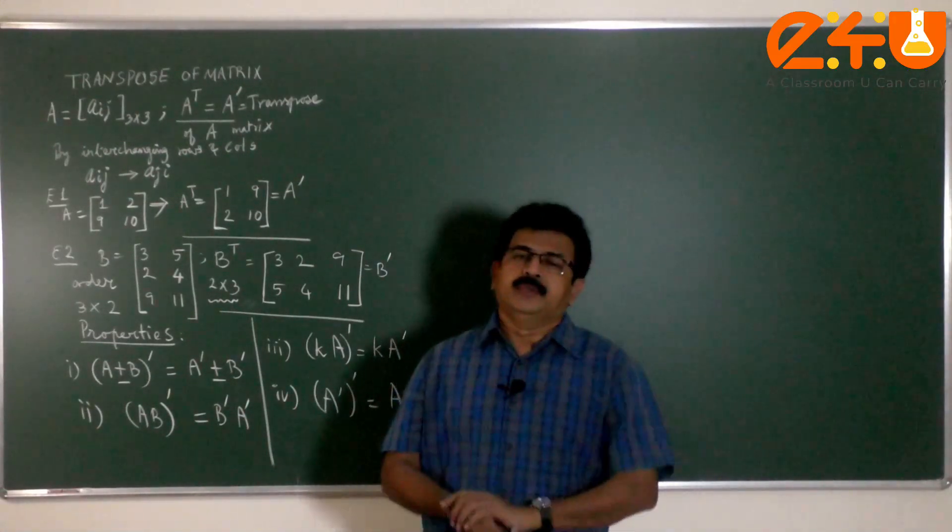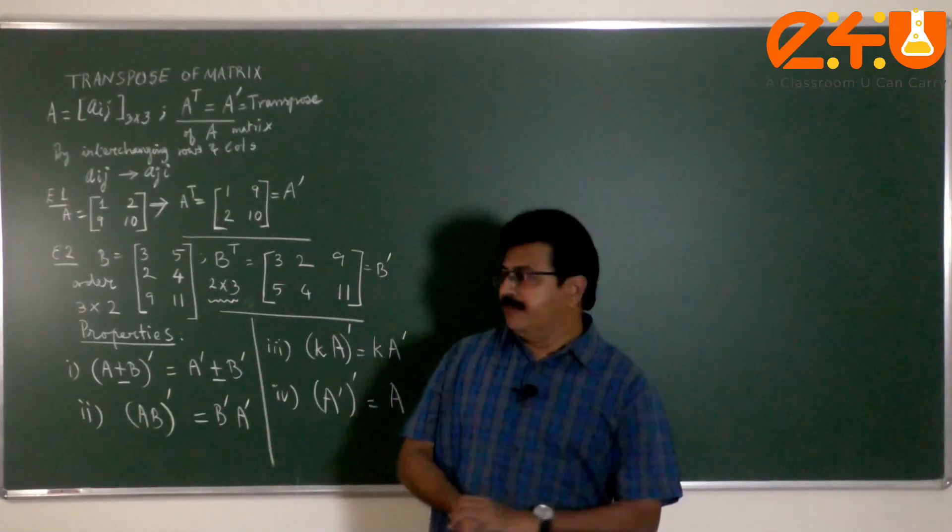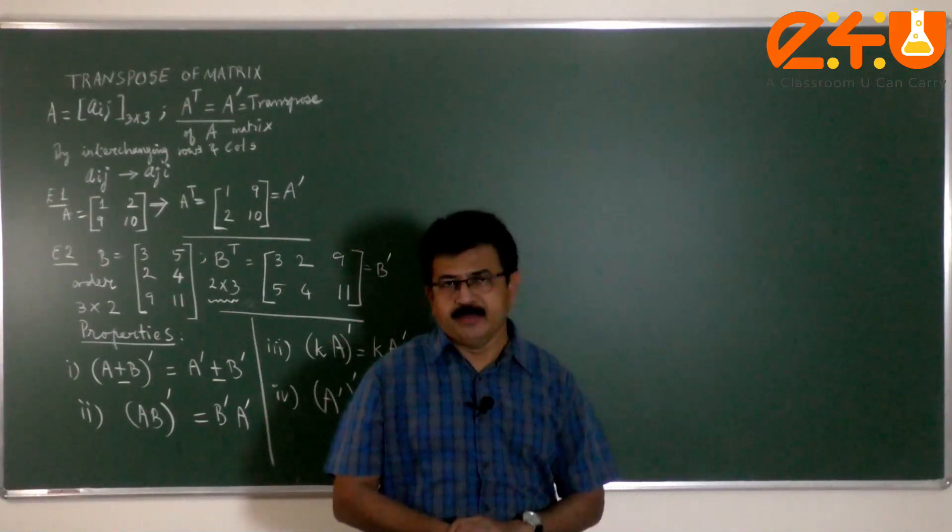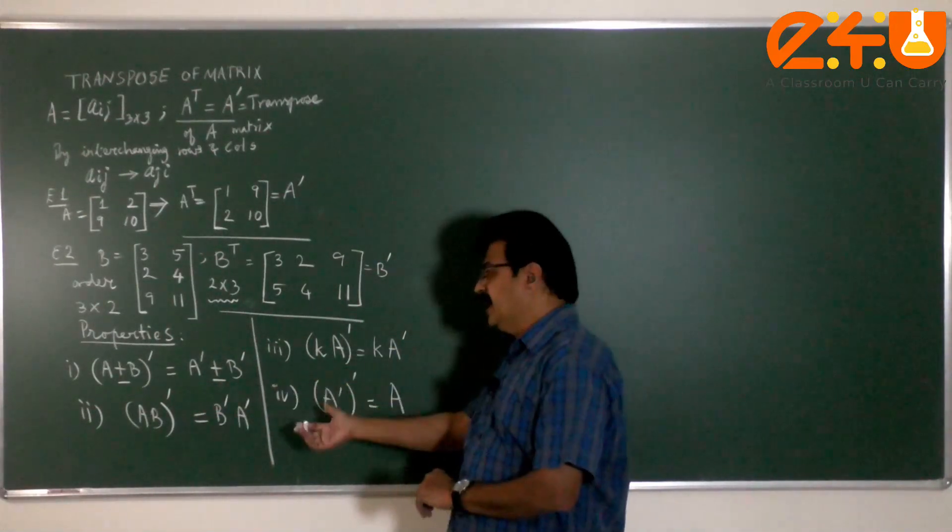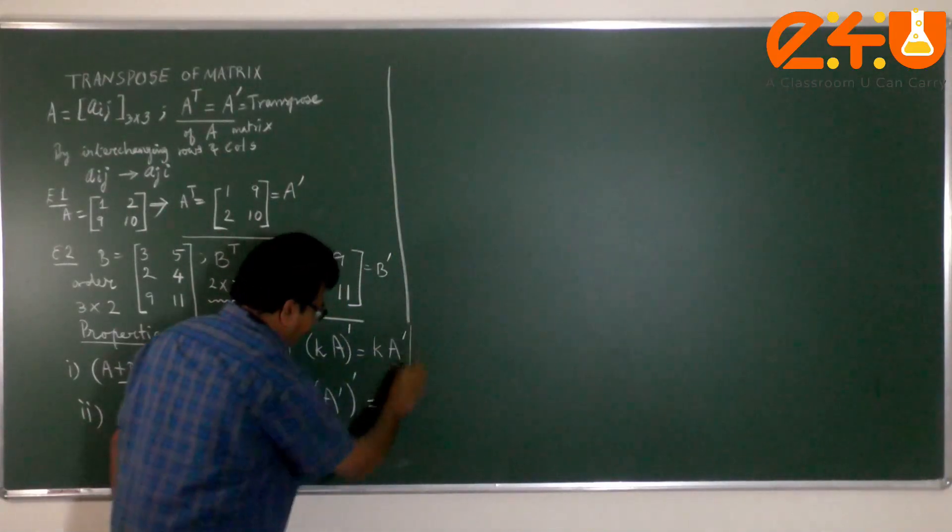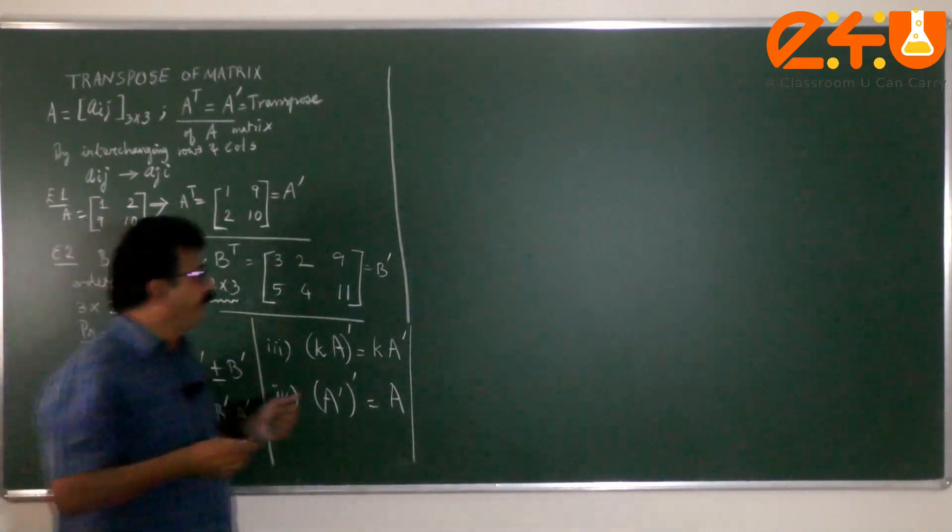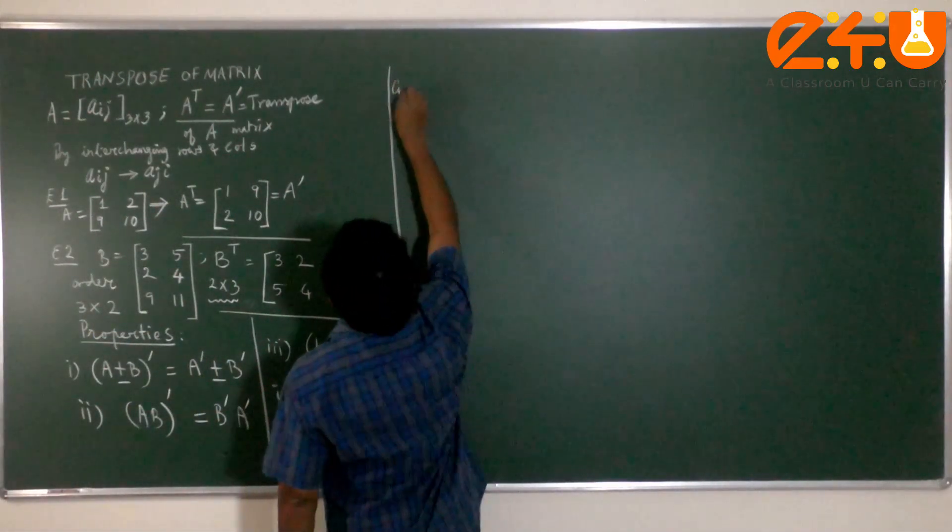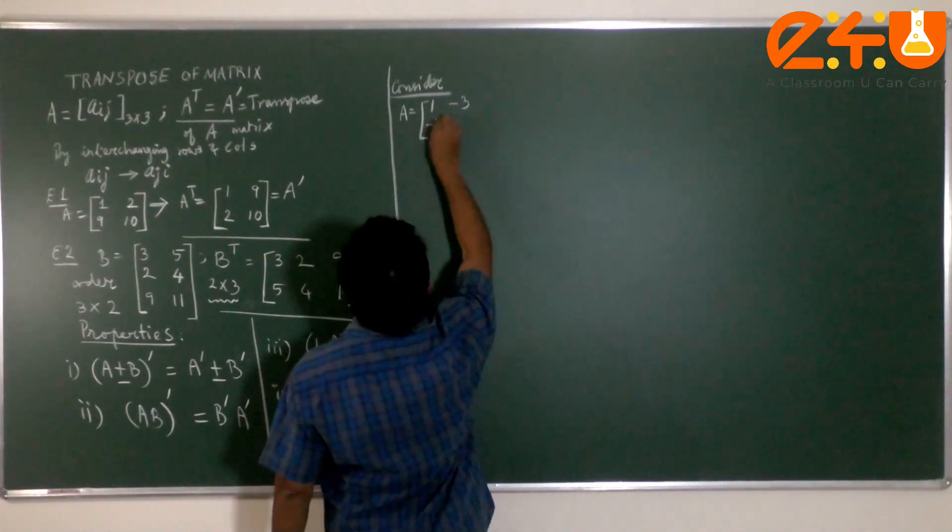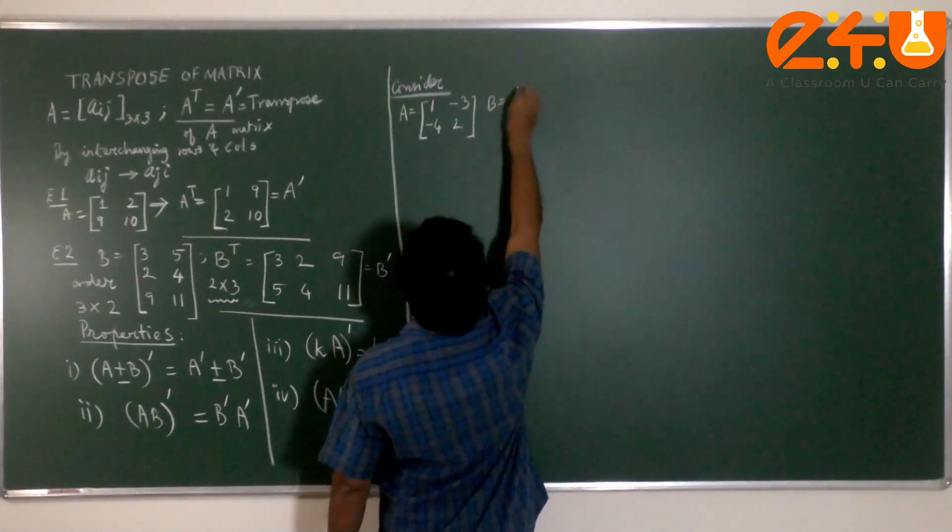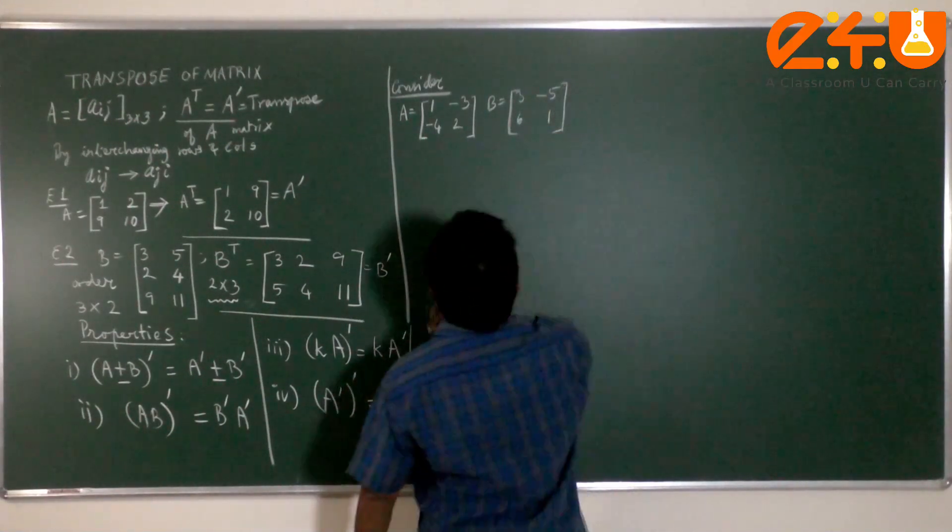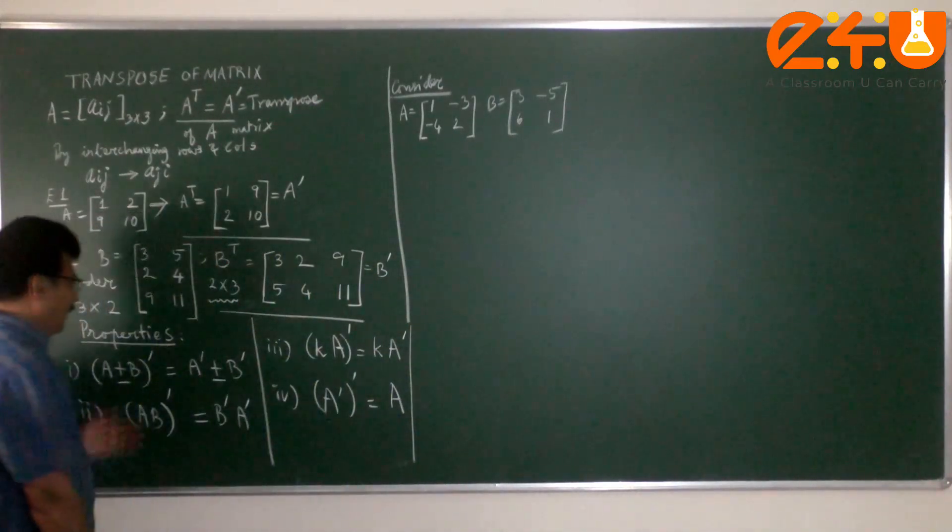Students may then be wondering how these properties are to be proved. We will not be able to give any tangible proof unless you give an example for every matrix A and B and verify the left-hand side and right-hand side and satisfy ourselves. Let us do it for a couple of simple 2 by 2 matrix only. I am not going to dwell on a very elaborate 3 by 3. Consider two matrices. A: 1, minus 3, minus 4, 2. And take B as 3, minus 5, 6, 1.